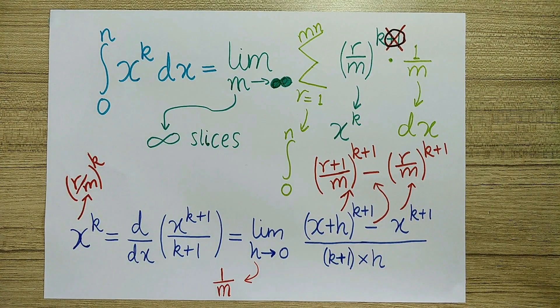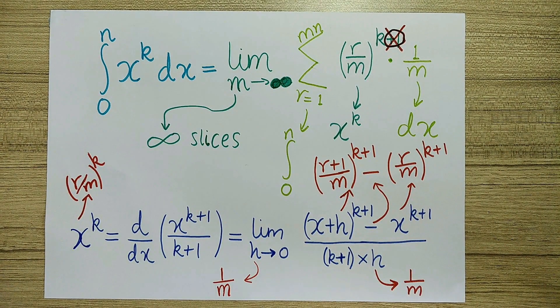In the Riemann sum, x was r over m and dx was 1 over m. In the first principle, h is dx. So we can replace x by r over m and h by 1 over m.